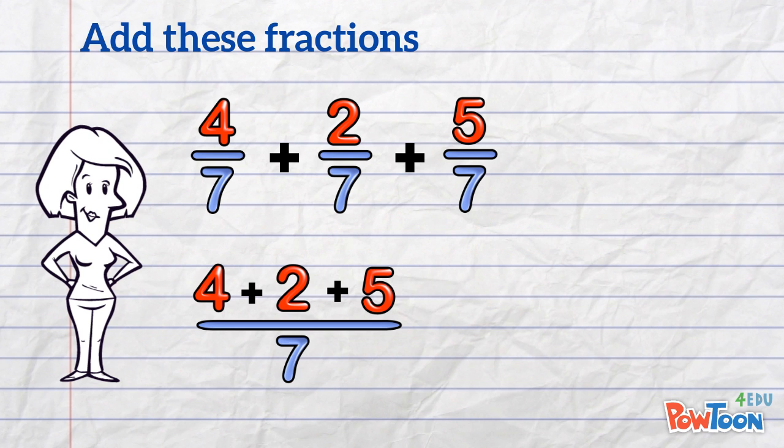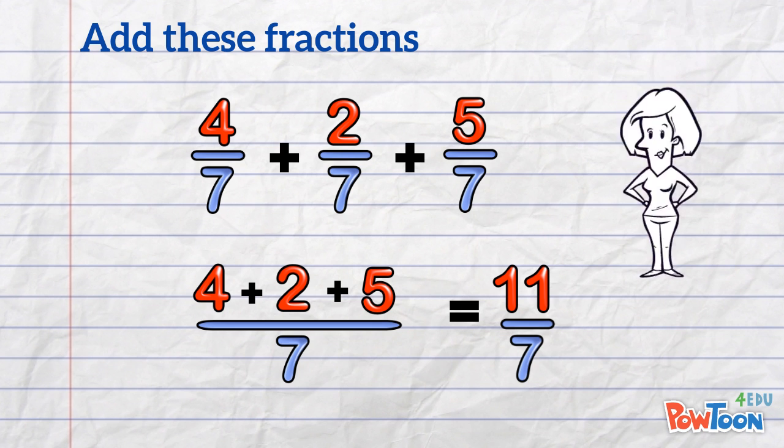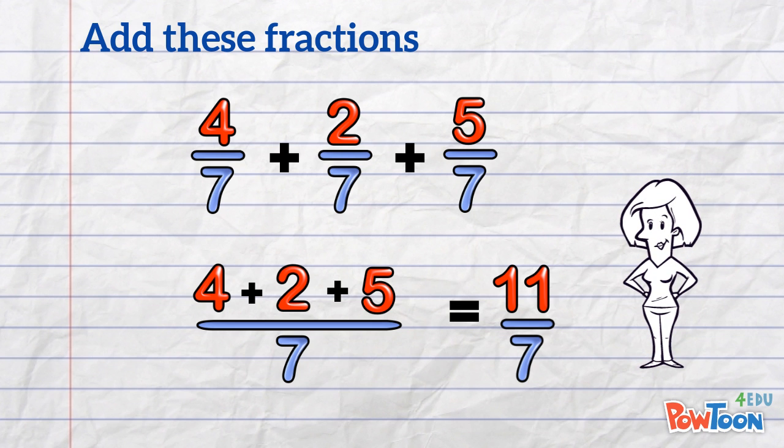Next, you just add it up. 4 plus 2 is 6, plus 5 is 11. We get 11 over 7. That's the numerators added, but now we've got an improper fraction.